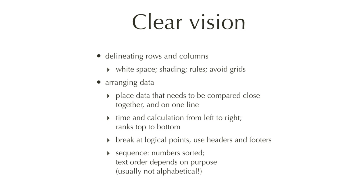For clear vision there are several steps you need to take to get your table right. The first step is delineating rows and columns — you have to decide what the ordering of your information is, whether the rows are important, the columns are important, or both, and there are visual cues you can use. The best one is white space: inserting a little bit of white space between rows or columns will make those stand out. The next possibilities are light shading, or using rules — very thin, usually gray lines — to delineate your information. You should certainly avoid grids like those you see when you open a spreadsheet program.